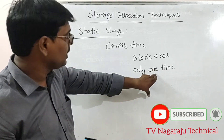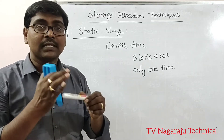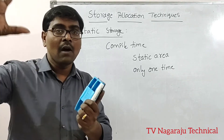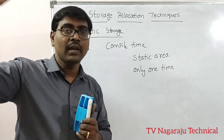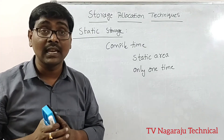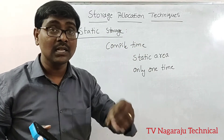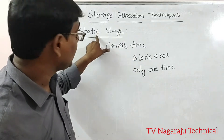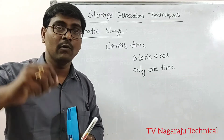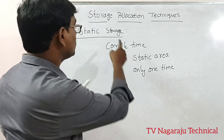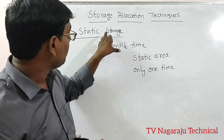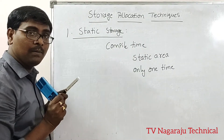What does 'only one time' mean? For example, if I create some memory in the static area and call a particular procedure, after completion if I call the same procedure again, it returns the previous values — it returns the local names. This is because in static allocation, memory is available throughout the program, and whenever we call it, it returns the previous values.